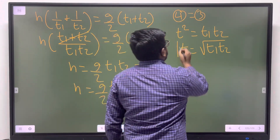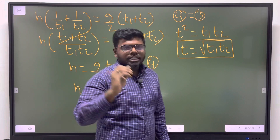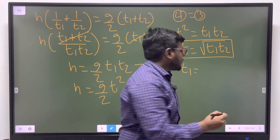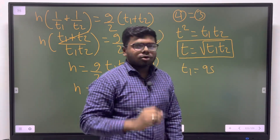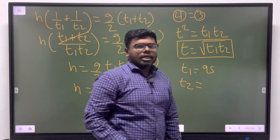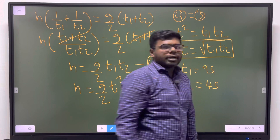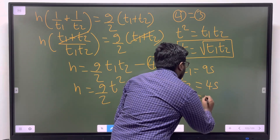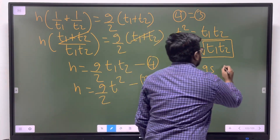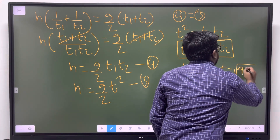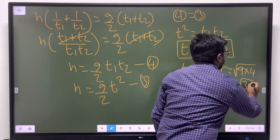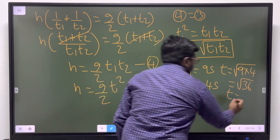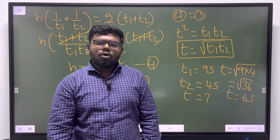So this is the result: t equals root of t1 times t2. For example, if t1 equals 9 and t2 equals 4, then t equals root of 9 times 4, equals root 36, equals 6 seconds. Okay students, thank you.